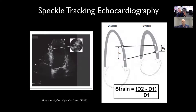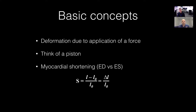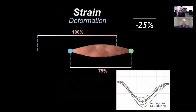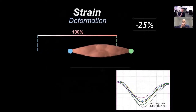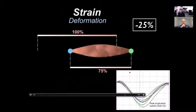When the kernels are a certain distance apart during diastole and come closer during systole, the difference between the two is strain. Speckle tracking echocardiography is just the software that tracks the kernels. The main value we get is called strain — it's a measure of deformation, essentially myocardial shortening. It's the starting length minus the ending length divided by the starting length. So if something goes from 100% to 75% length, that is minus 25%, and strain is always a negative value for longitudinal contraction.